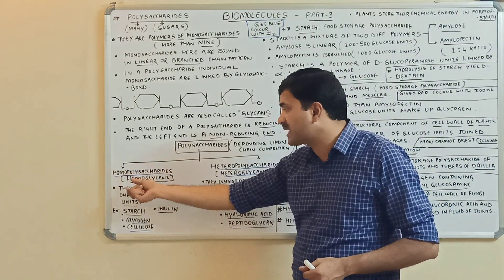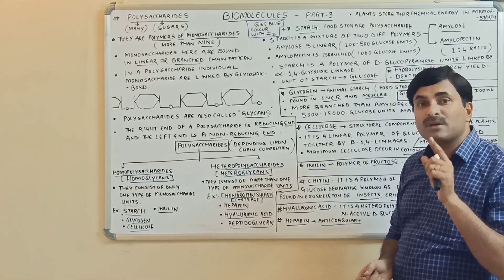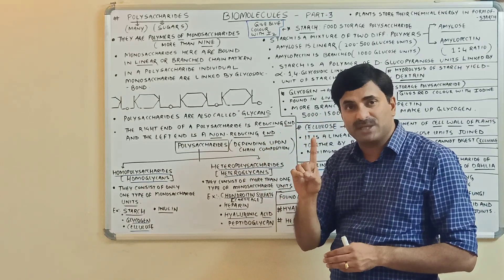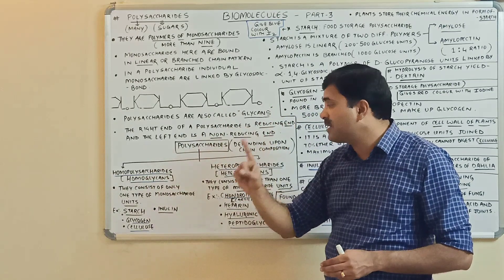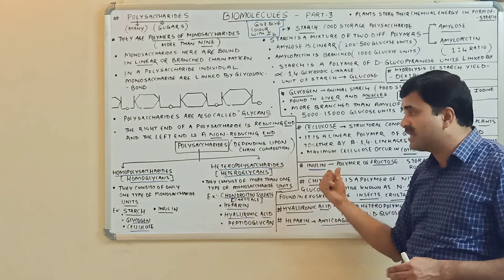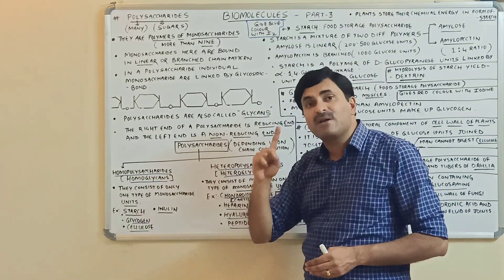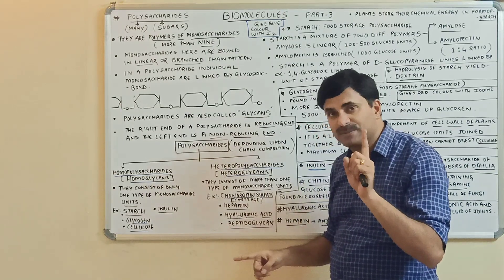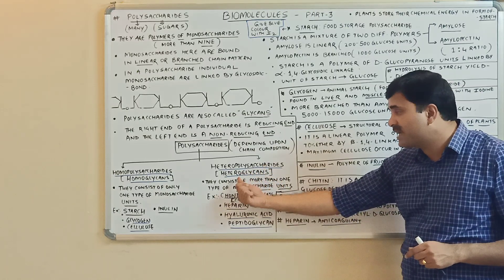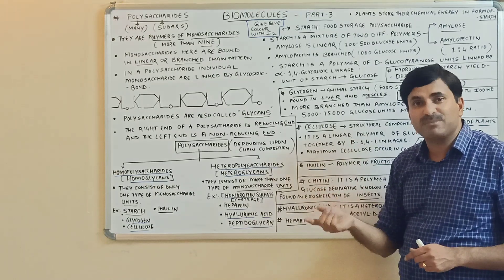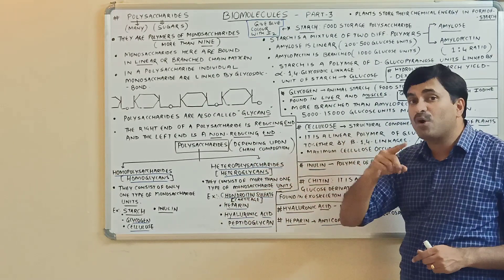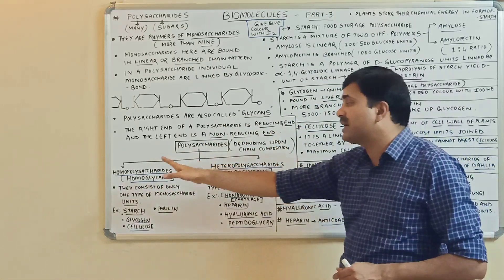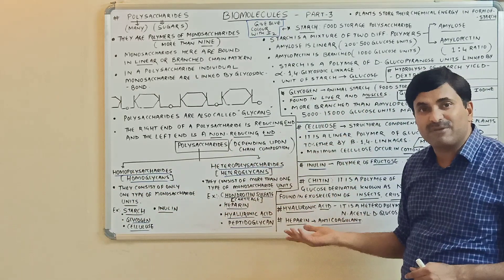Homoglycans or homopolysaccharides consist of only one type of monosaccharide unit. Heteropolysaccharides consist of more than one type of monosaccharide unit. That is the chief difference between the two: homopolysaccharides have only one type of monosaccharide unit, while heteropolysaccharides have more than one type.